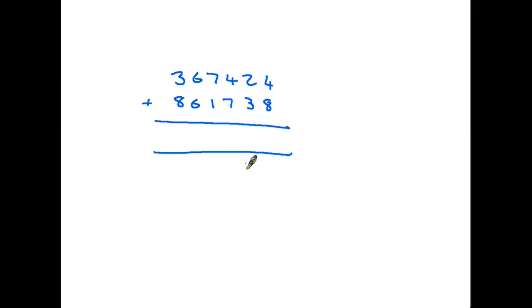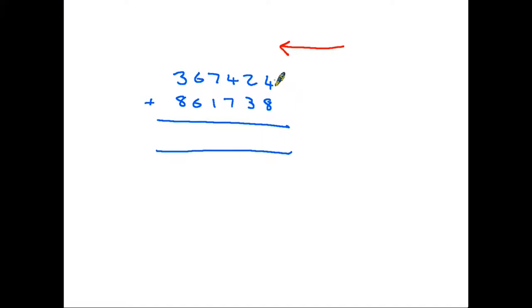So addition, we're going to add these two numbers together and the rule is that we start on the right hand side and we work our way that way. So we are going to start by adding 8 plus 4. 8 plus 4 is 12.